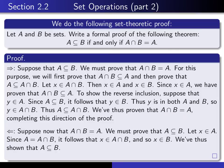We've thus proven that A intersect B equals A, completing this direction of the proof. Now for the reverse direction: suppose A intersected with B is equal to A. We must prove that A is a subset of B. Let X be in A. Since A equals the intersection of A with B, it follows that X is also in the intersection, and in particular X must be in B. We've shown that a generic element of A is necessarily also an element of B, so A is a subset of B — and that completes the proof.